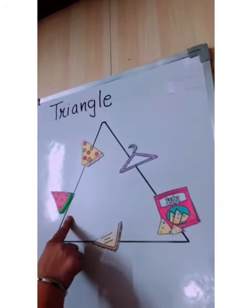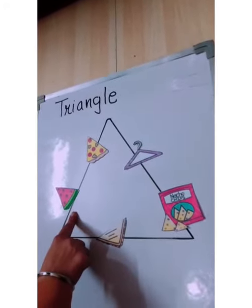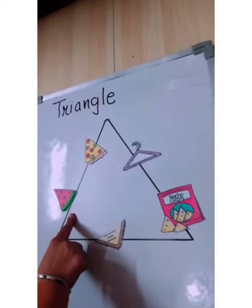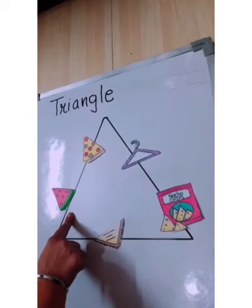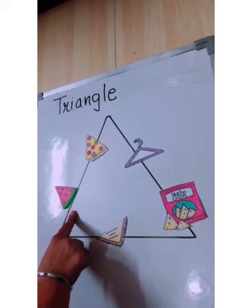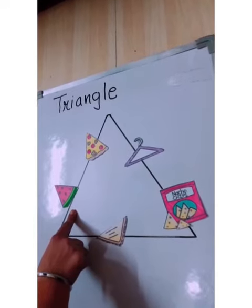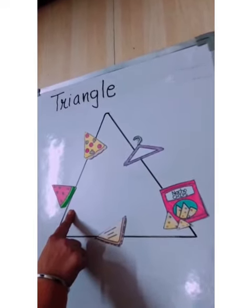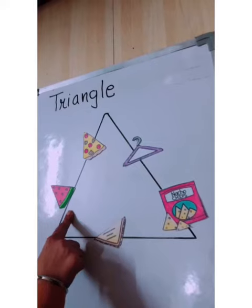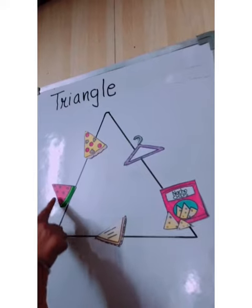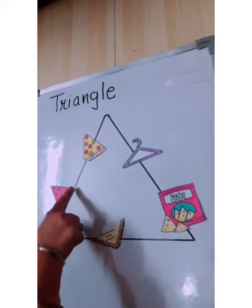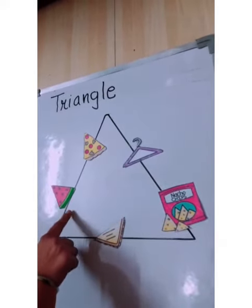Now next, this is a fruit — juicy, juicy fruit. Watermelon! And it has maximum seeds. The shape of watermelon is triangle shape.